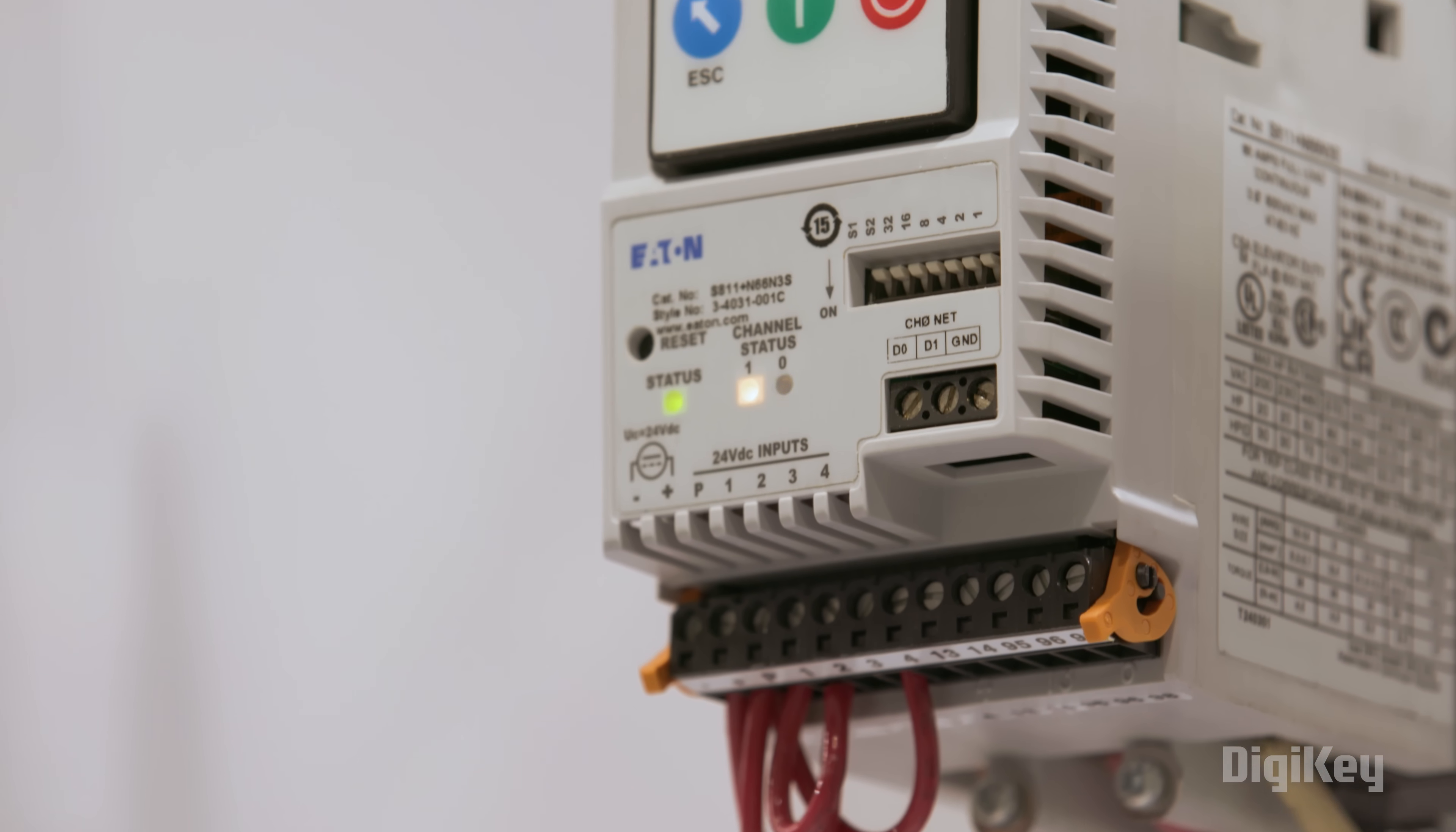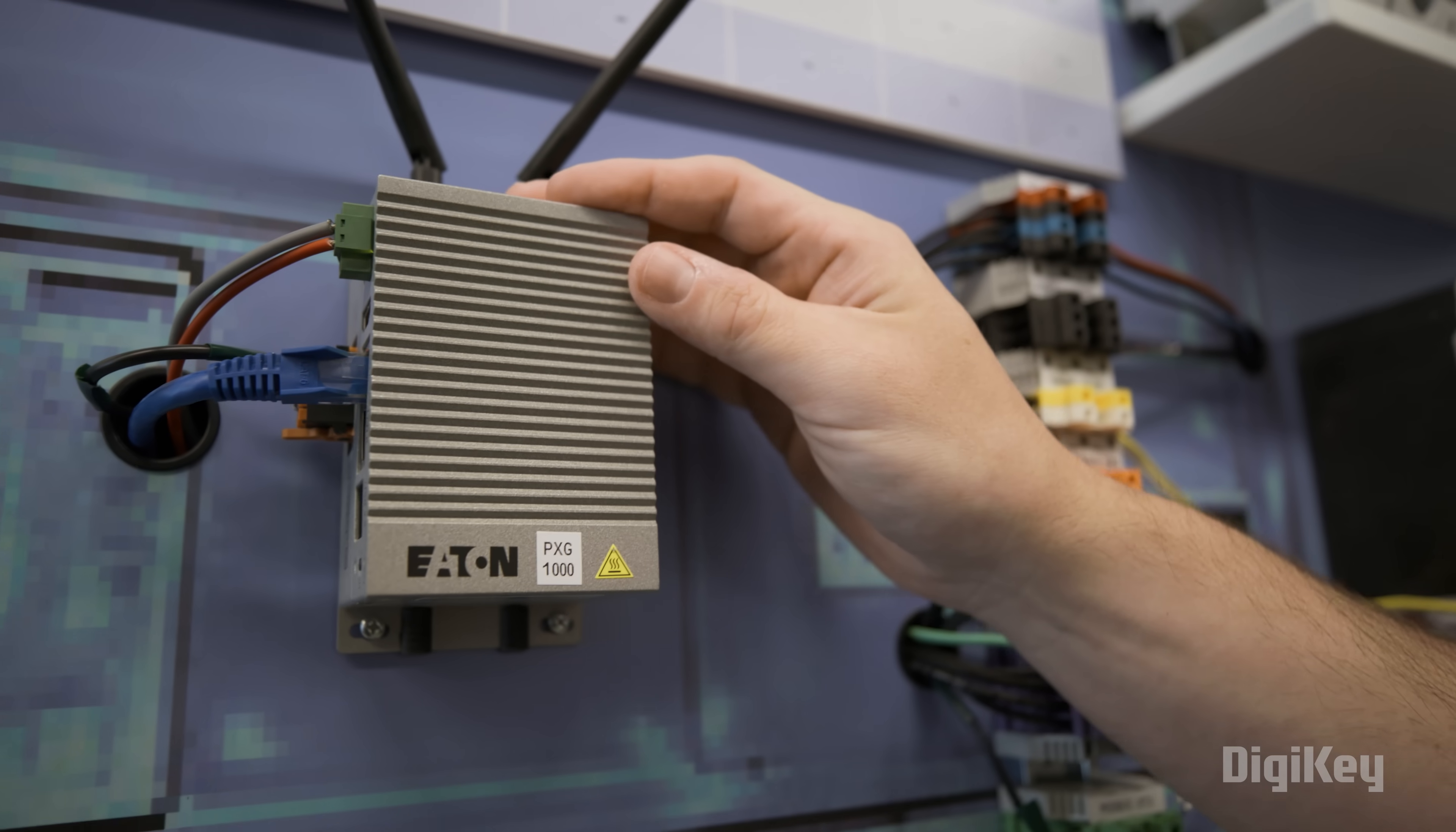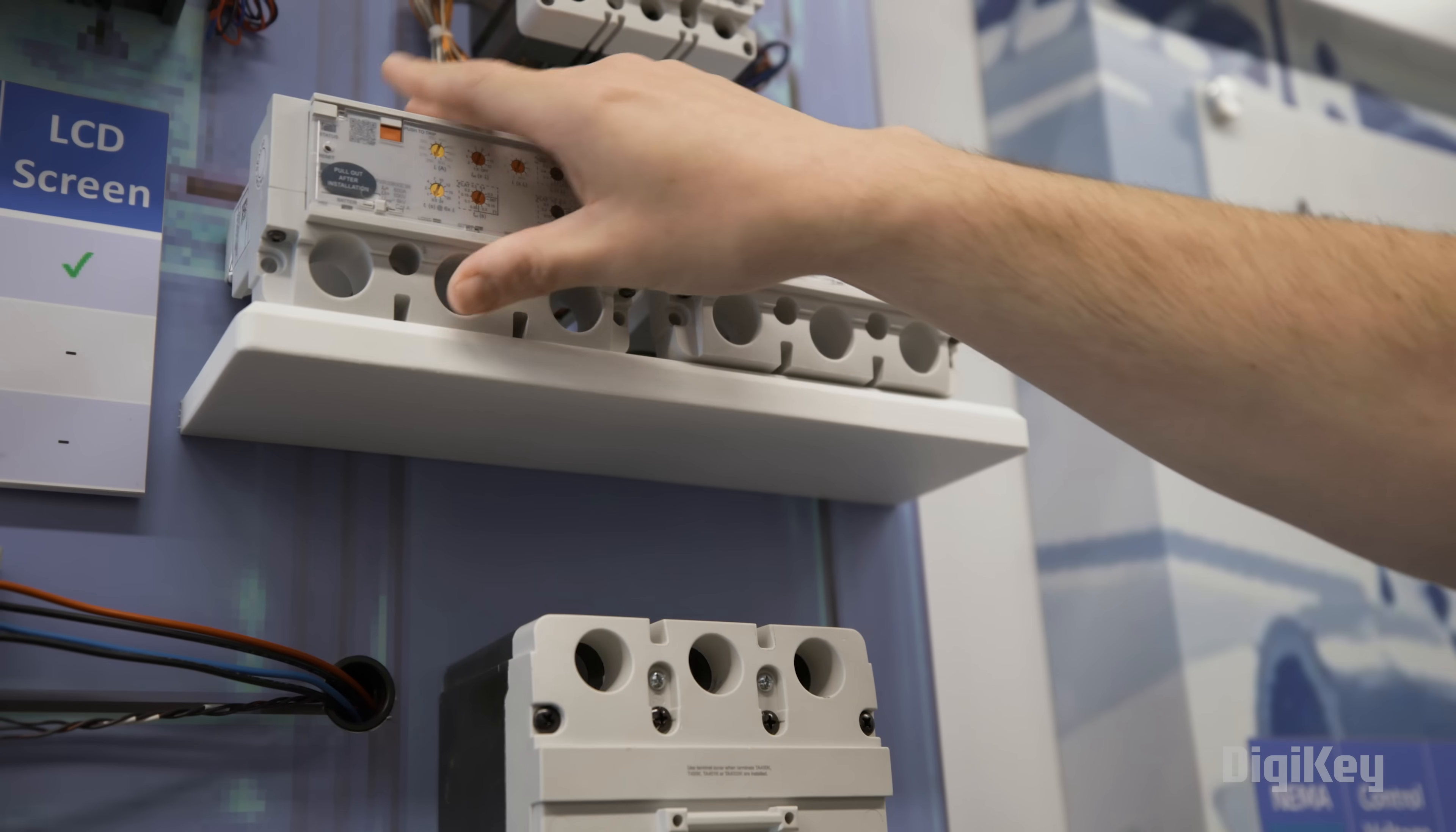With our PXR trip units, we have breaker health status, which was first-of-its-kind when we launched in 2019. Similar to your phone battery, as you have high operations, high faults, or internal temperature too high, the health of that breaker will slowly indicate when it needs to be removed for inspection or service.